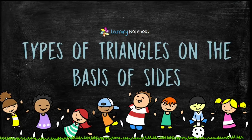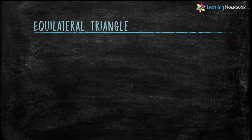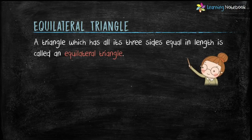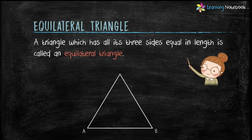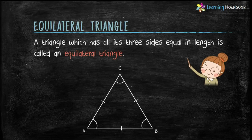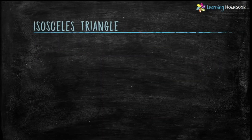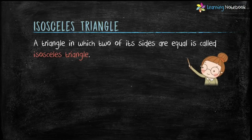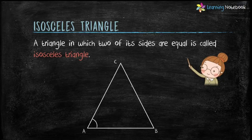Types of triangles on the basis of sides. First is equilateral triangle — a triangle which has all its three sides equal in length is called an equilateral triangle. Here triangle ABC is an equilateral triangle because AB equals BC equals CA. Second type is isosceles triangle — a triangle in which two of its sides are equal is called an isosceles triangle.